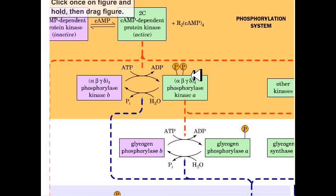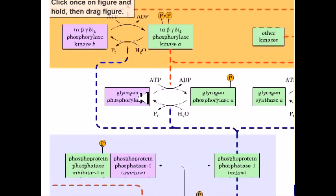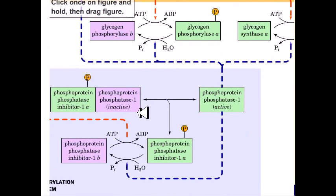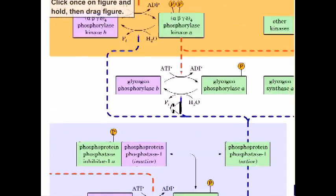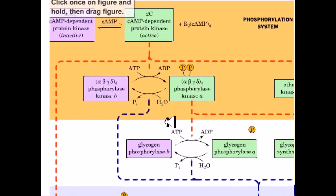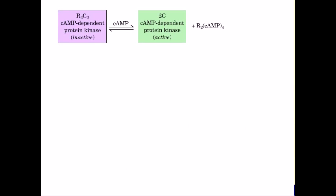In this diagram, the active forms of enzymes and inhibitors designated with 'A' are shown in green boxes, while the inactive forms designated with 'B' are shown in purple. All purple-colored enzymes are in their inactive forms, and once activated — sometimes by phosphorylation, sometimes by dephosphorylation — those activated modes of enzymes are denoted in green.